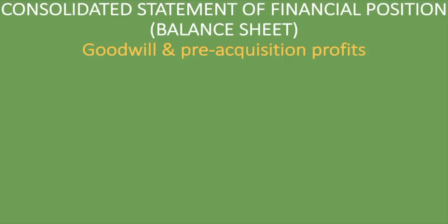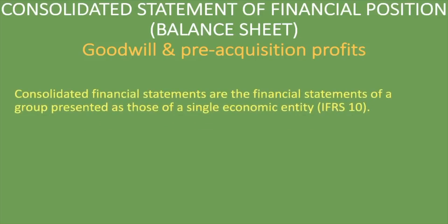We have done a lesson on the consolidated statement of financial position before — a very basic consolidated statement of financial position. So if you'd like to understand what it is, why we do it, and how we do it, you might want to check that lesson out before this one, because this one is a bit more advanced. The consolidated financial statements are the financial statements of a group presented as those of a single economic entity, according to IFRS 10.